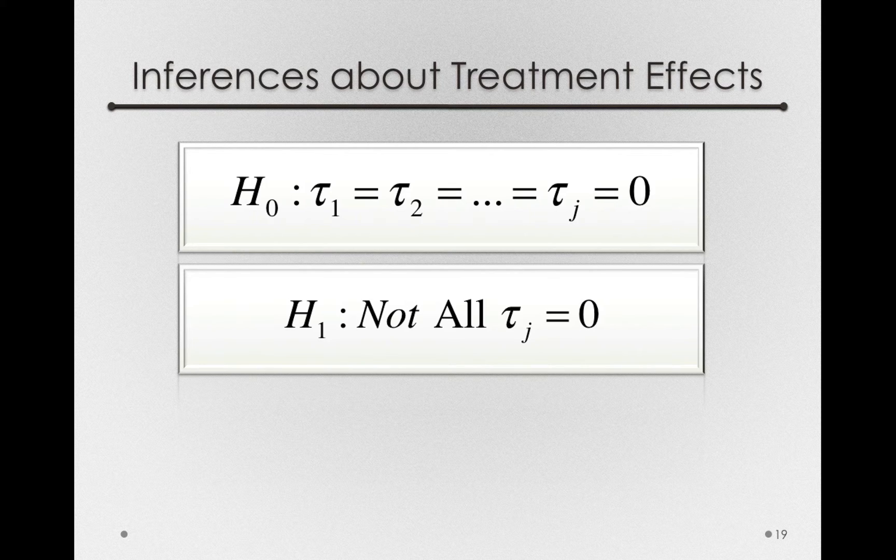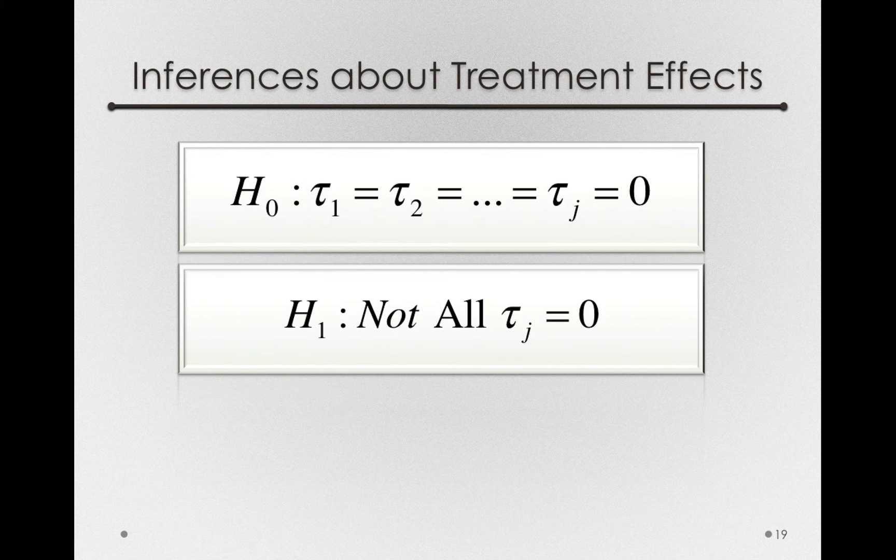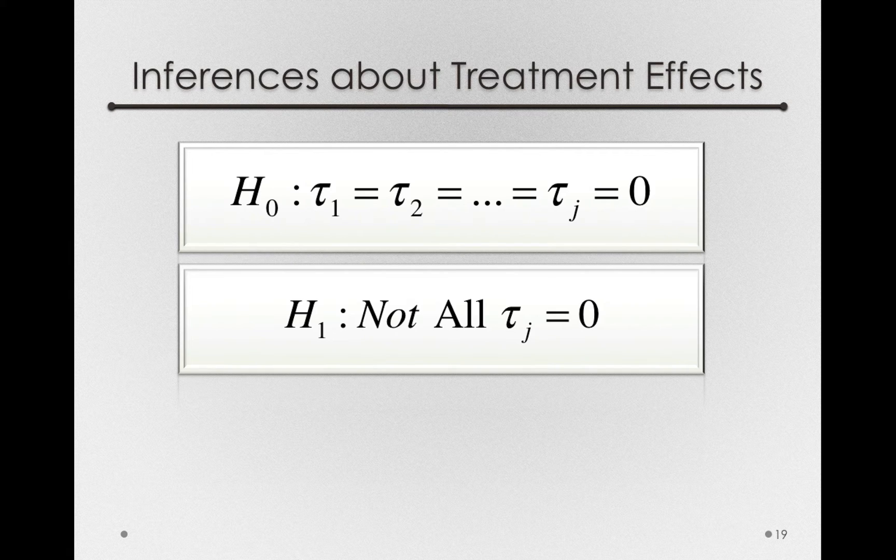In our example, we only had three treatment offsets, one for each of the different airlines. But we can have factors with hundreds or thousands of treatment offsets.